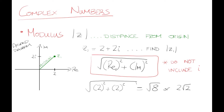This plot is called an Argand diagram. The y-axis is where the imaginary part goes and the x-axis is where the real part goes. You can see the green dot for z1 is above the real number 2 and across from the imaginary number positive 2i — that's why the dot is there. So our modulus for this number is root 8, or 2 root 2.